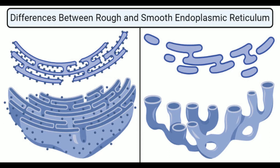The rough endoplasmic reticulum is a type of endoplasmic reticulum consisting of flattened sacs, studded with protein-synthesizing particles termed ribosomes on the outer surface. The rough endoplasmic reticulum is a part of the endomembrane system present in the cytoplasm of the cell. The organelle is involved in the synthesis, folding, modification, and transport of proteins to different organelles within or outside the cell. The name rough ER is given due to the appearance of ribosomes on the surface as studs under the microscope.